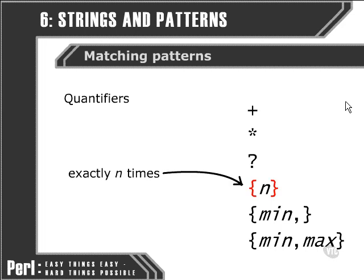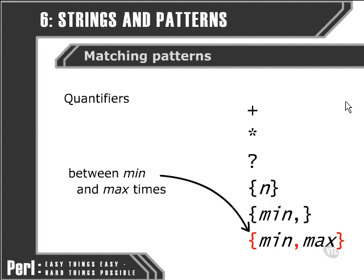We can also use the curly brackets, which in the context of regular expressions allow us to specify an exact number of times that we want the immediately preceding character to appear. In place of the letter N, we'd put in the number of times we want that particular character to appear. If we don't know exactly how many times the character is going to appear, we can use a minimum — for example, six followed by a comma would mean Perl looks for at least six instances. If we want to specify upper and lower limits for our quantifier, we can do so by using two figures with a comma between them.